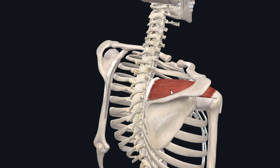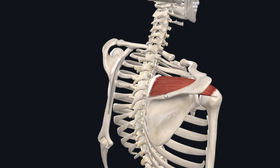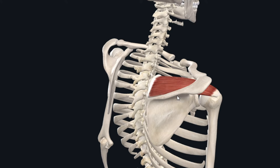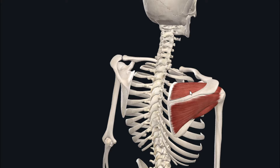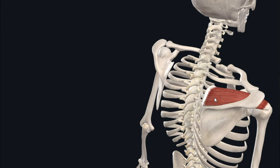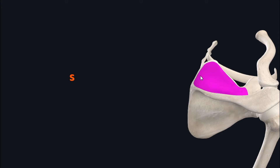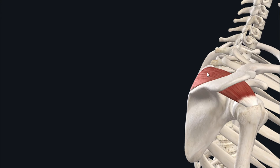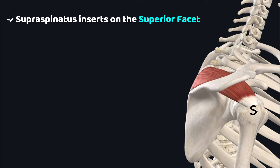The second muscle is the supraspinatus, a relatively small muscle of the scapular region and one of the four rotator cuff muscles. It lies deep to the insertion of the trapezius. The supraspinatus originates from the supraspinous fossa, the area on the superior aspect of the scapula just above the spine, then runs underneath the acromion to insert on the superior facet of the greater tubercle of the humerus.